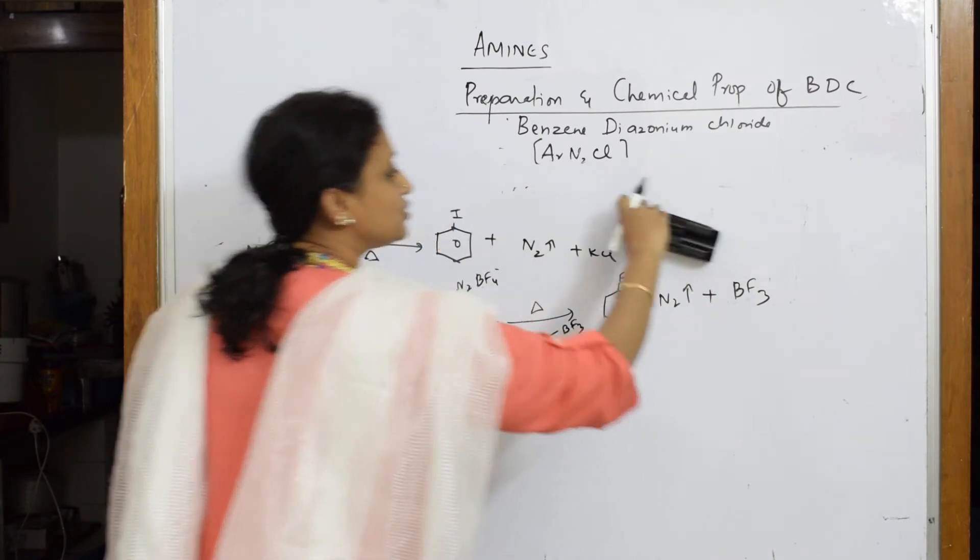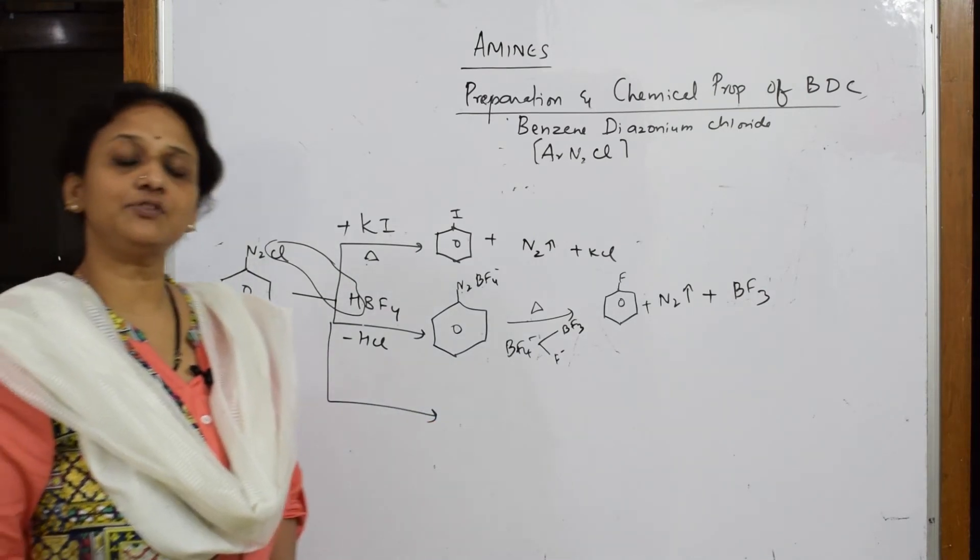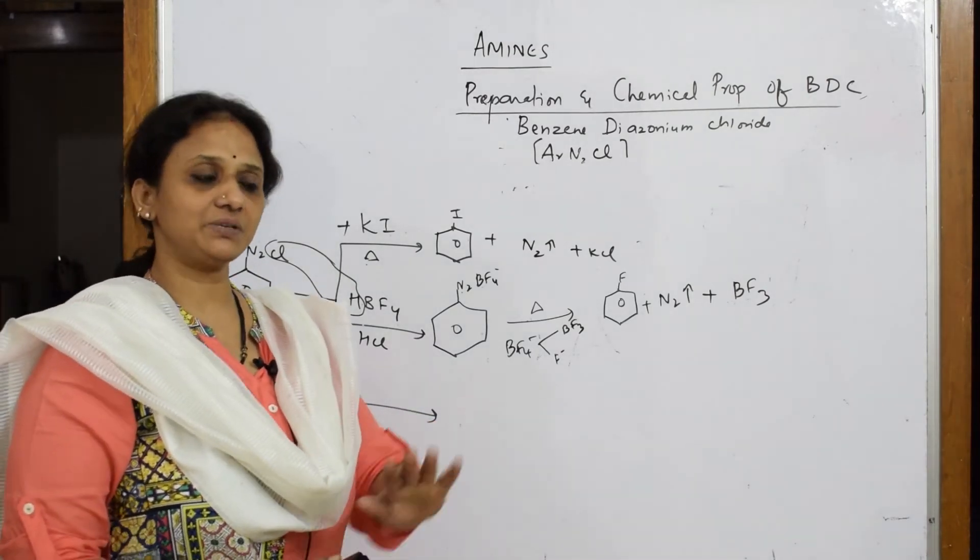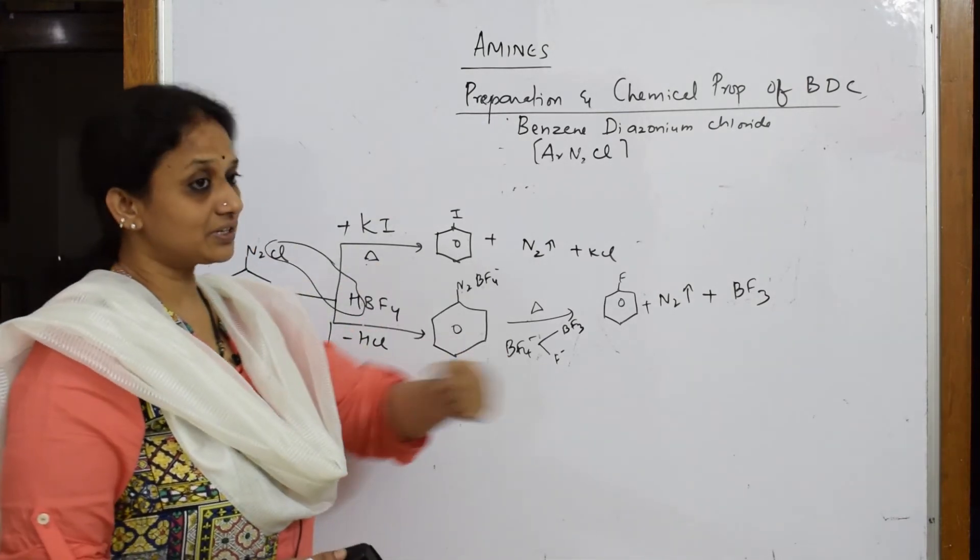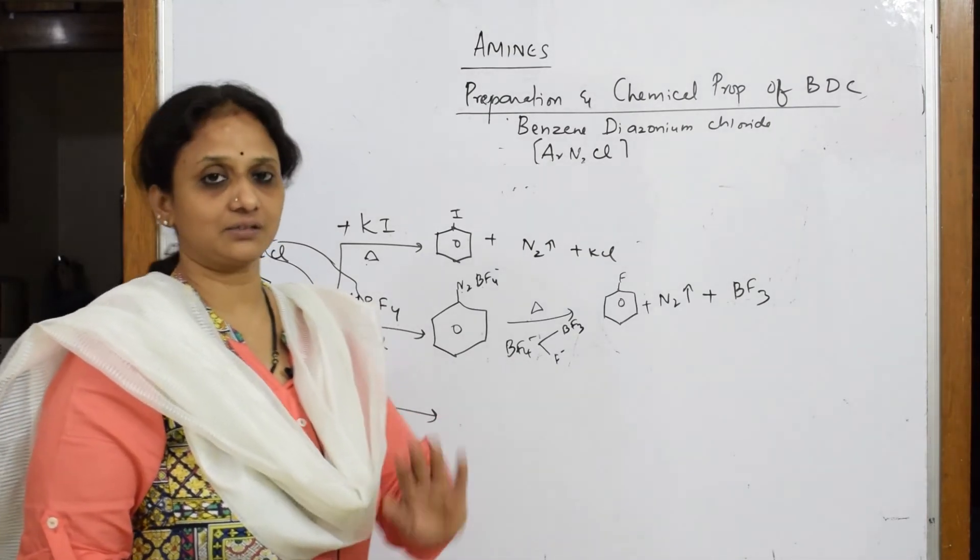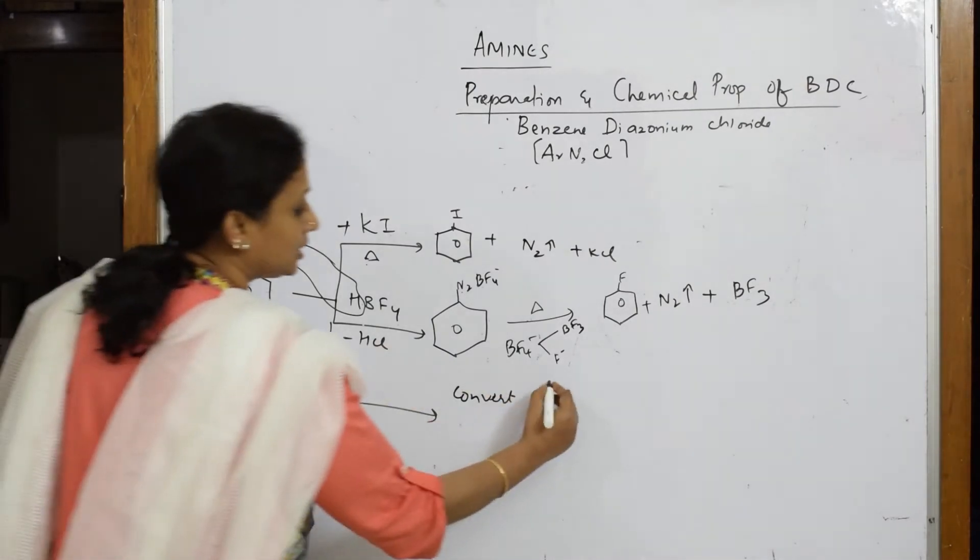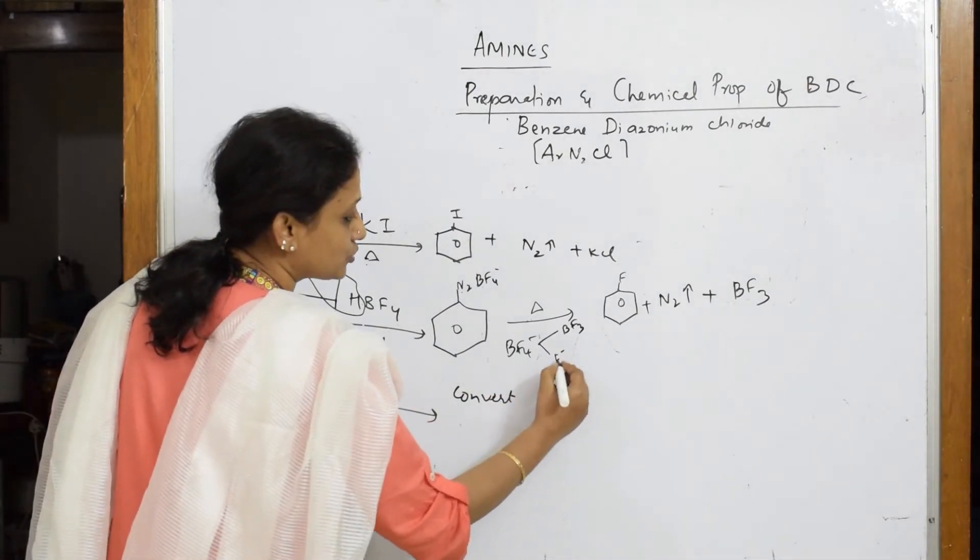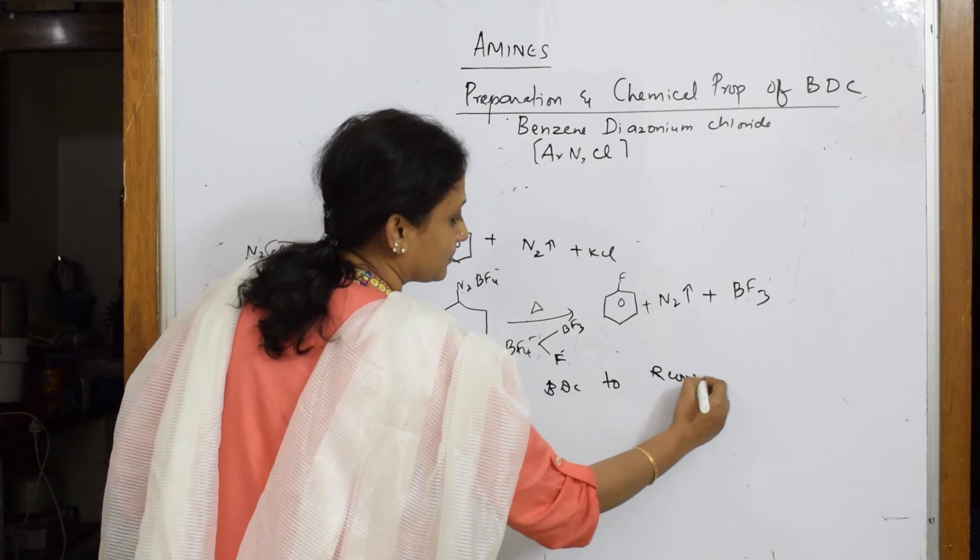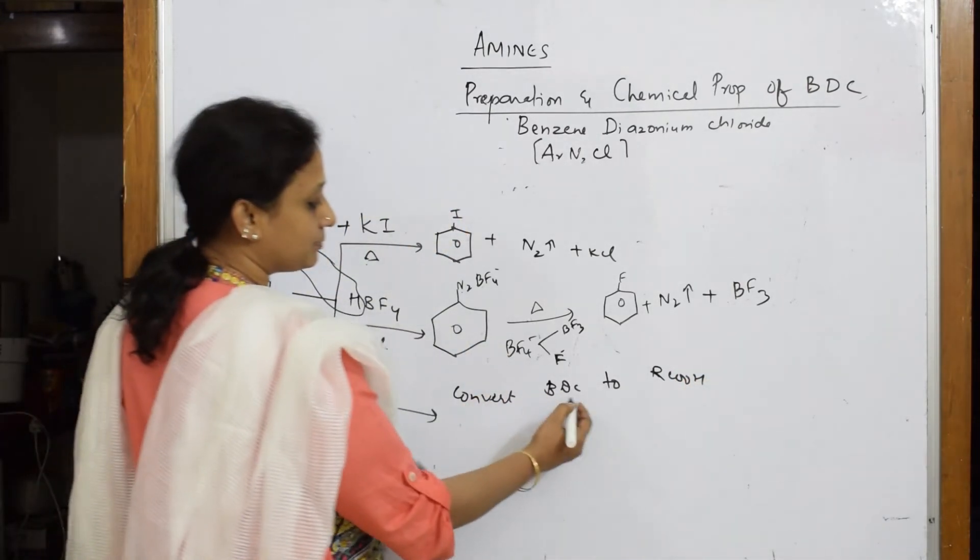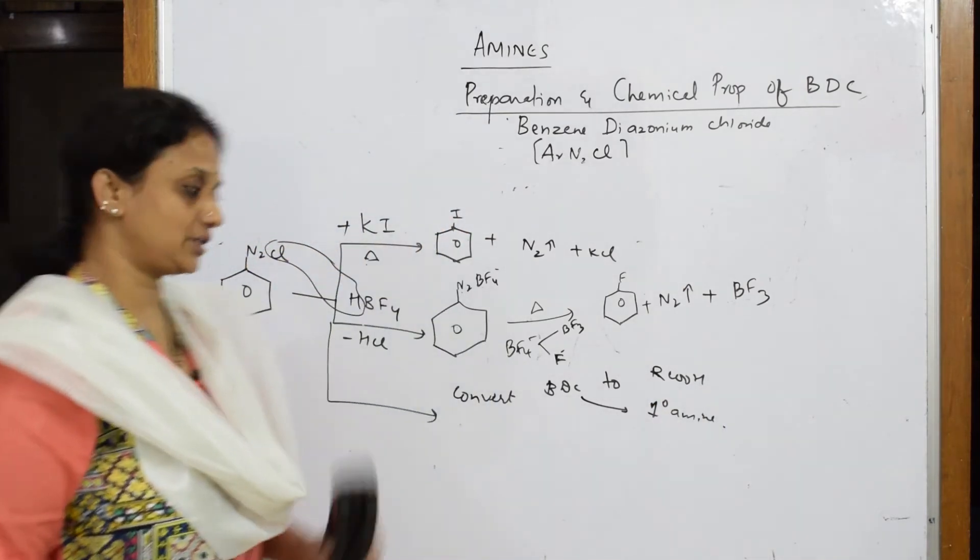Now, I have to use this CuCN, copper cyanide, in presence of HCN. In my exam, basically, when they give you CuCN and HCN, that means it is Sandmeyer's reaction to prepare. So, in Sandmeyer's, you prepared your cyanobenzene. Further, if I have to convert cyanobenzene, how is the question given?